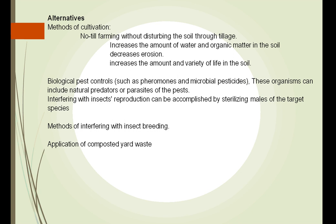We can also try interfering with insect reproduction, such as sterilizing the males. We've tried this with malaria mosquitoes and decreased the amount of malaria. We can also use composted yard waste — all of our grass clippings put back down there will decay and return to the soil.